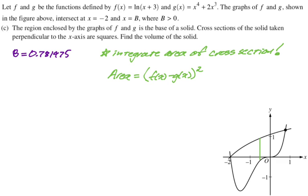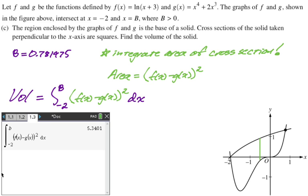To find our volume, we need to integrate this. So the volume is going to be the integral from negative 2 to b of our area formula, which is f(x) minus g(x) quantity squared. And then dx, calculator question. So I just punched it into the calculator. Calculator gives me 5.340.